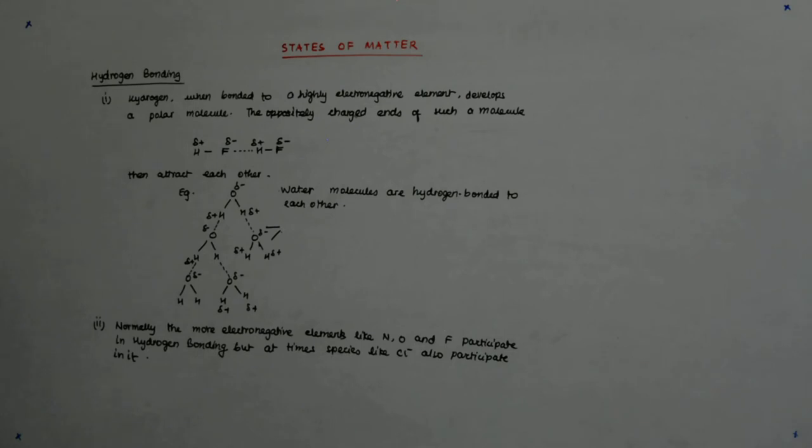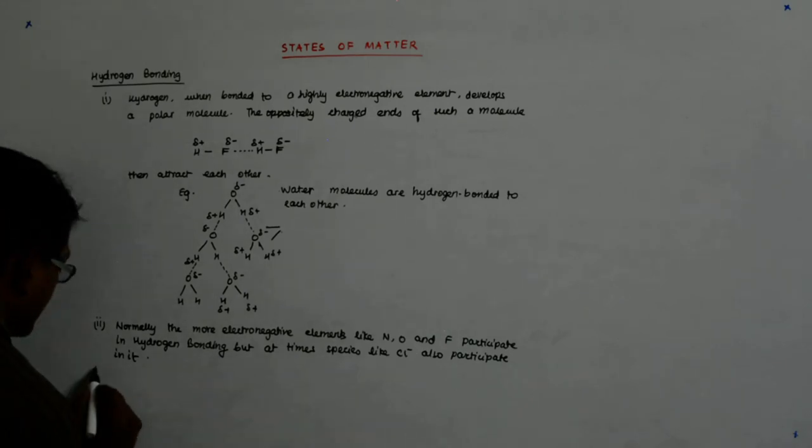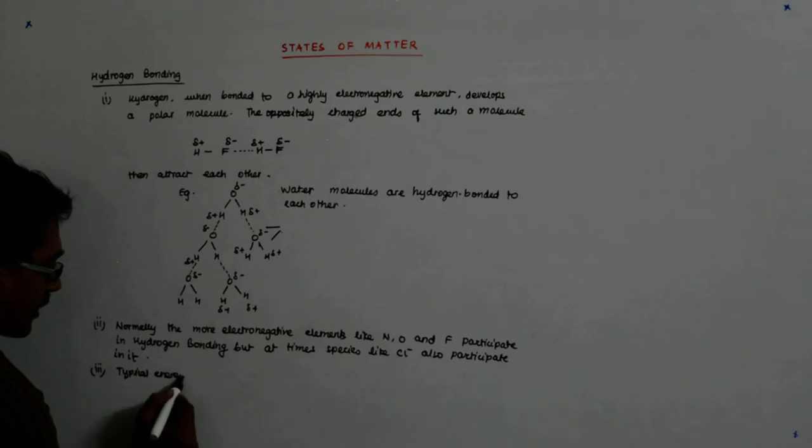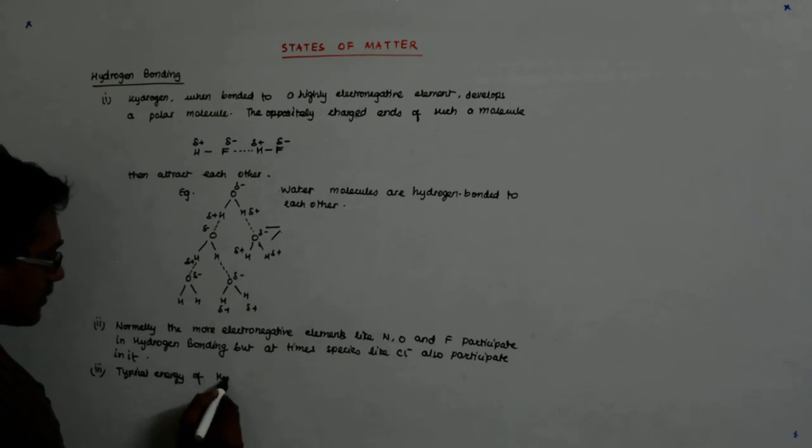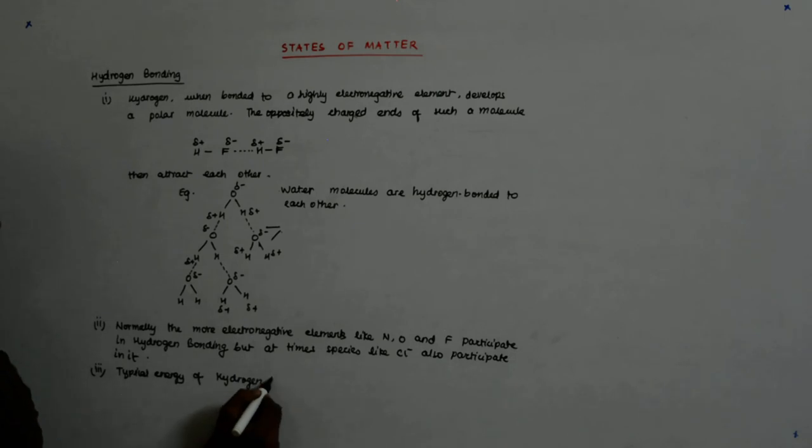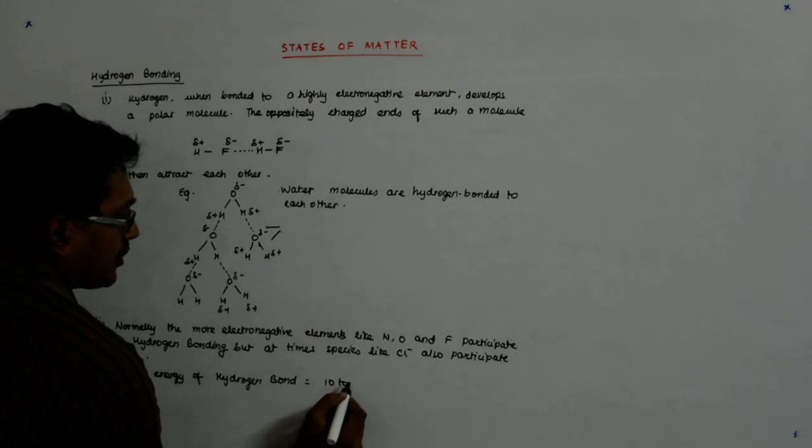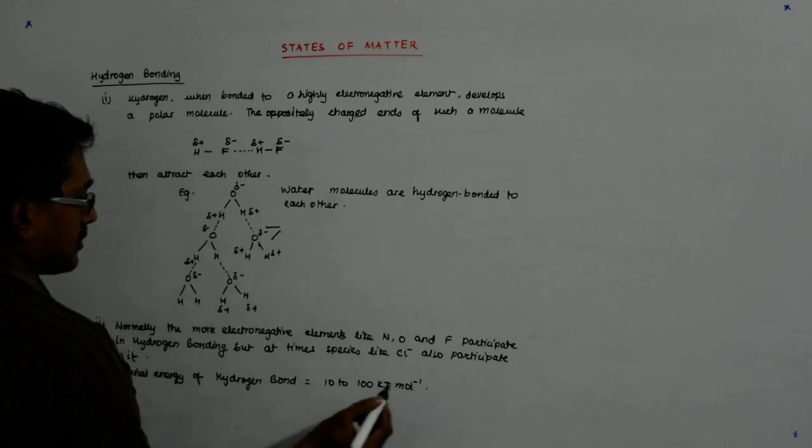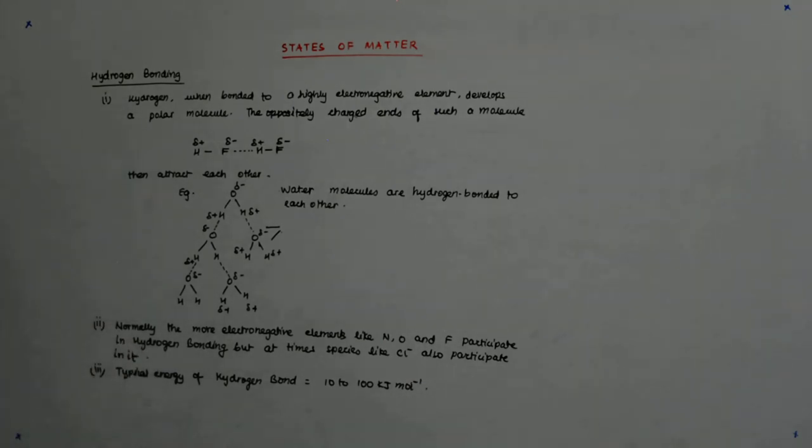And what happens? The typical bond energy, the energy of the hydrogen bond is from 10 to 100 kilojoule per mole, which is a huge amount of energy.